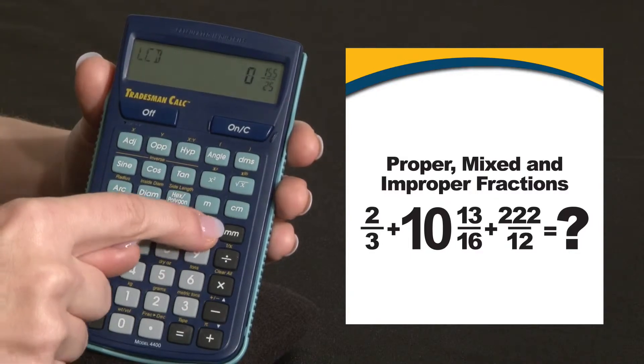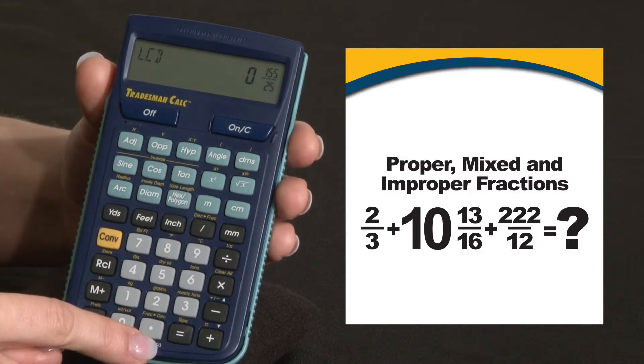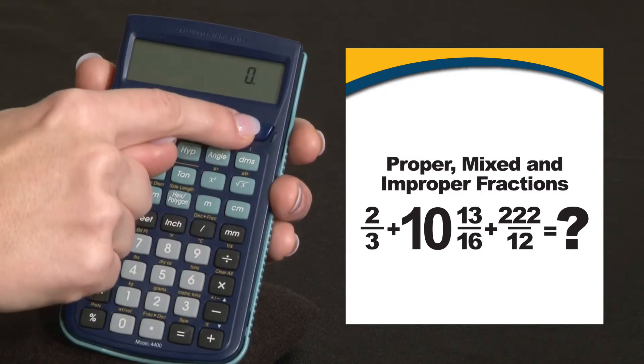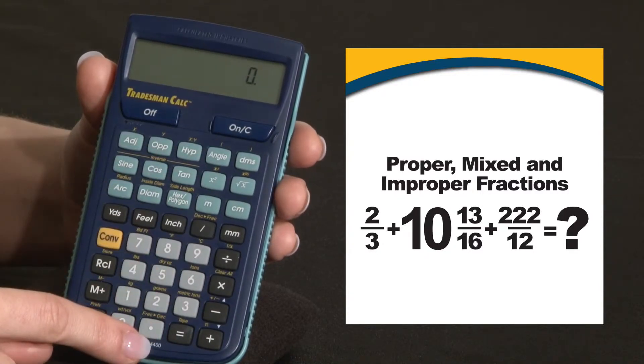Press the fraction bar again to return to our original improper fraction. To simplify a large fraction down to its lowest terms, just press convert fraction bar twice.